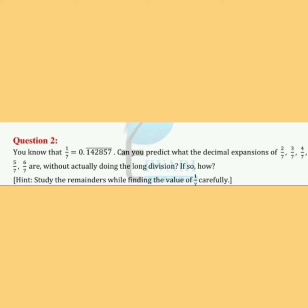Question number two में हमें क्या बोला है? 1/7 का answer already given है, और वो बोल रहे हैं कि बाकी के जो expansion हैं — 2/7, 3/7, 4/7, 5/7 और 6/7 — उसको बिना long division method के decimal में कैसे convert करोगे? मतलब इसको particularly divide नहीं करना है।